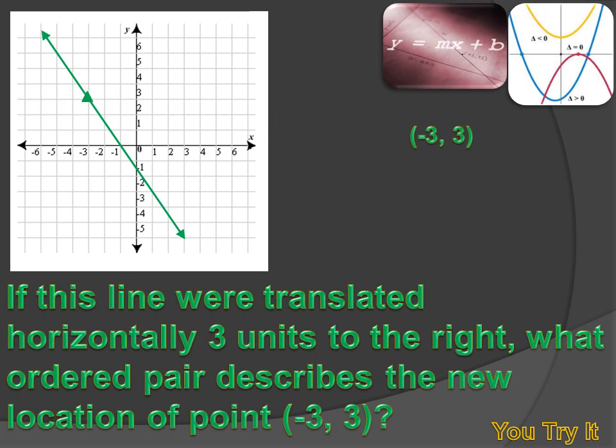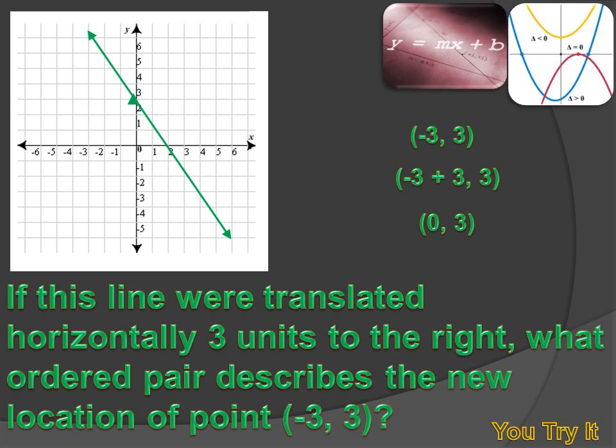So, my point minus 3, 3 minus 3 is the x-value is going to be changed if I translate this line three units to the right. It's going to be increased by three. My x-value is going to be minus 3 plus 3. And my y-value wouldn't have changed. It'll remain three. Well, minus 3 plus 3 is zero. So, my new point will be zero, three. When my line moves over that point that was minus 3, 3 will become zero, 3.